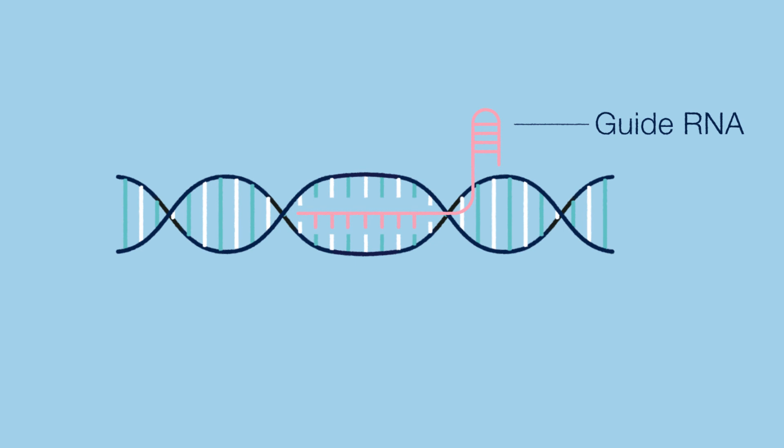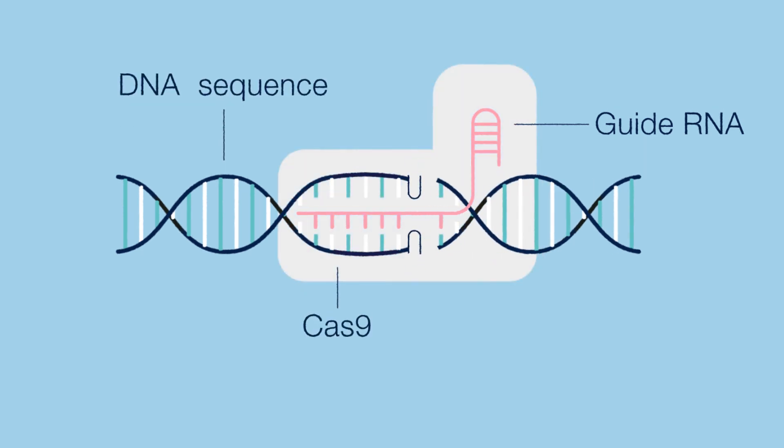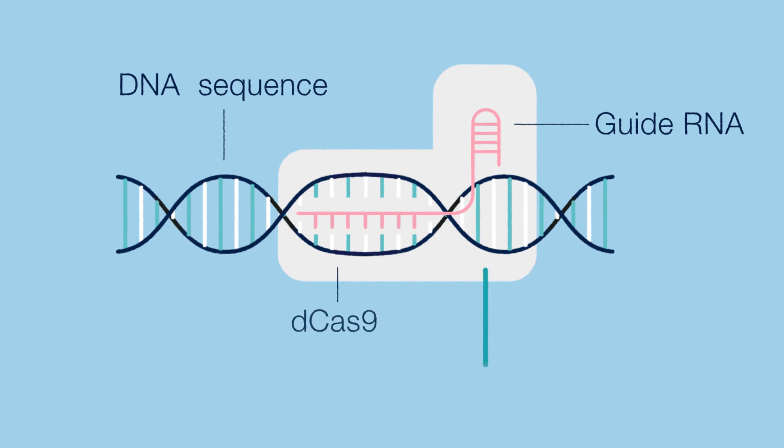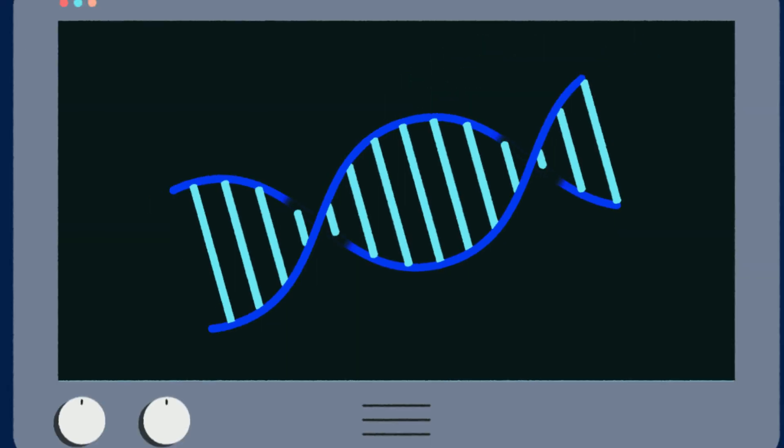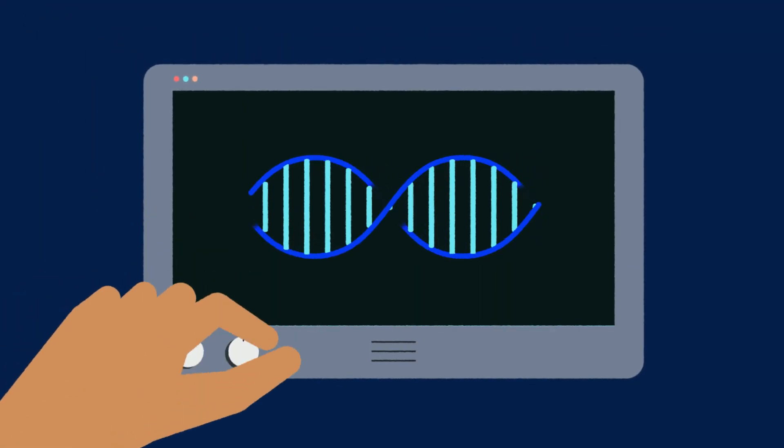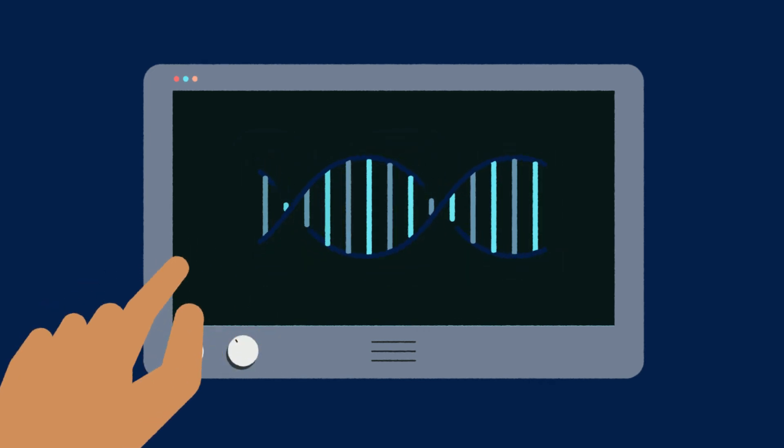A guide RNA that targets a specific DNA sequence, and the Cas9 protein, the wire cutter. To give CRISPR more powers, UCSF scientists created a mutated version of Cas9 called dCas9 that doesn't cut DNA, but instead swaps in different tools that can be used to dial up or dial down gene expression levels.